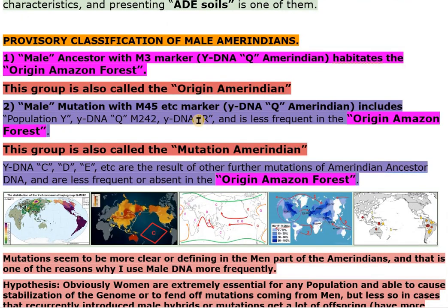Provisory Classification of Male Amerindians: 1. Male ancestor with M3 marker, Y-DNA Q Amerindian, inhabits the origin Amazon forest. This group is also called the origin Amerindian. 2. Male mutation with M45 etc. marker, Y-DNA Q Amerindian, includes Population Y, Y-DNA Q M242, Y-DNA R, and is less frequent in the origin Amazon forest. This group is also called the mutation Amerindian.